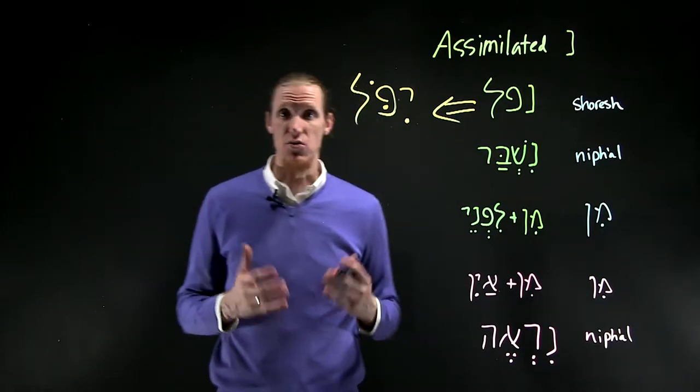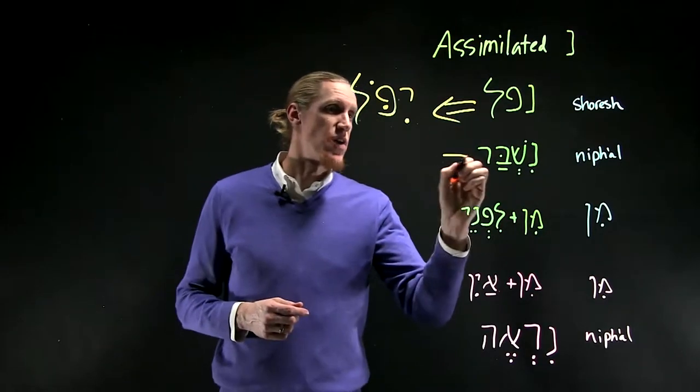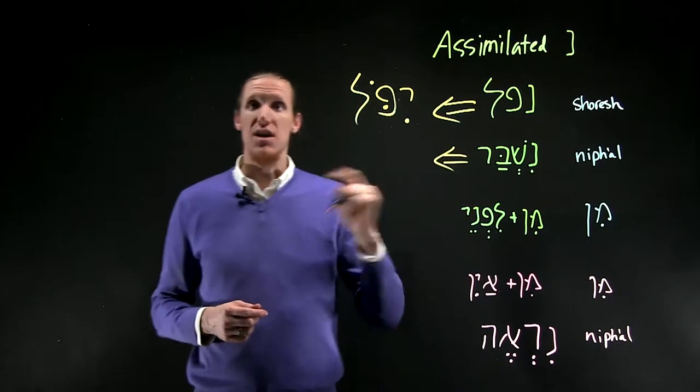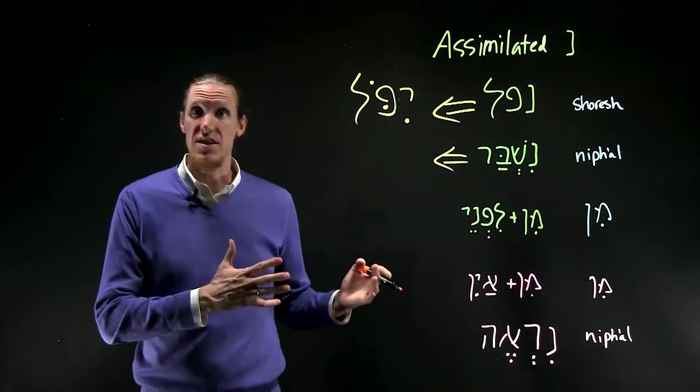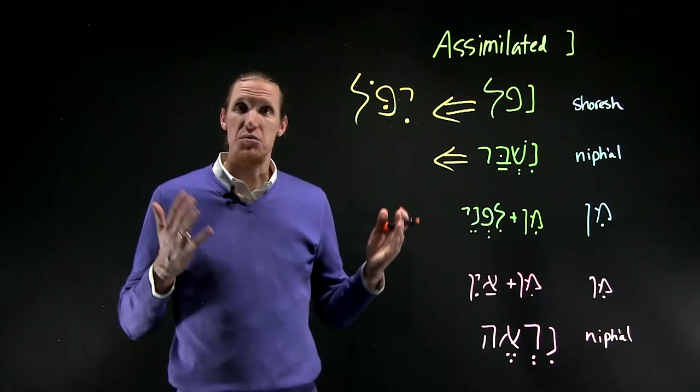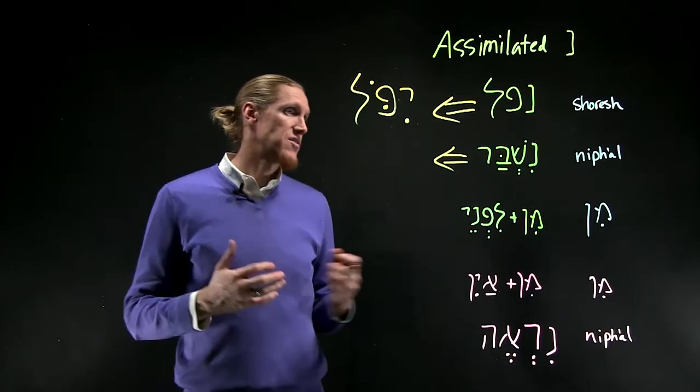Another occasion in which the noon will assimilate is when you have a nifal imperfect, or perhaps an infinitive, or any number of other forms, vav consecutive.